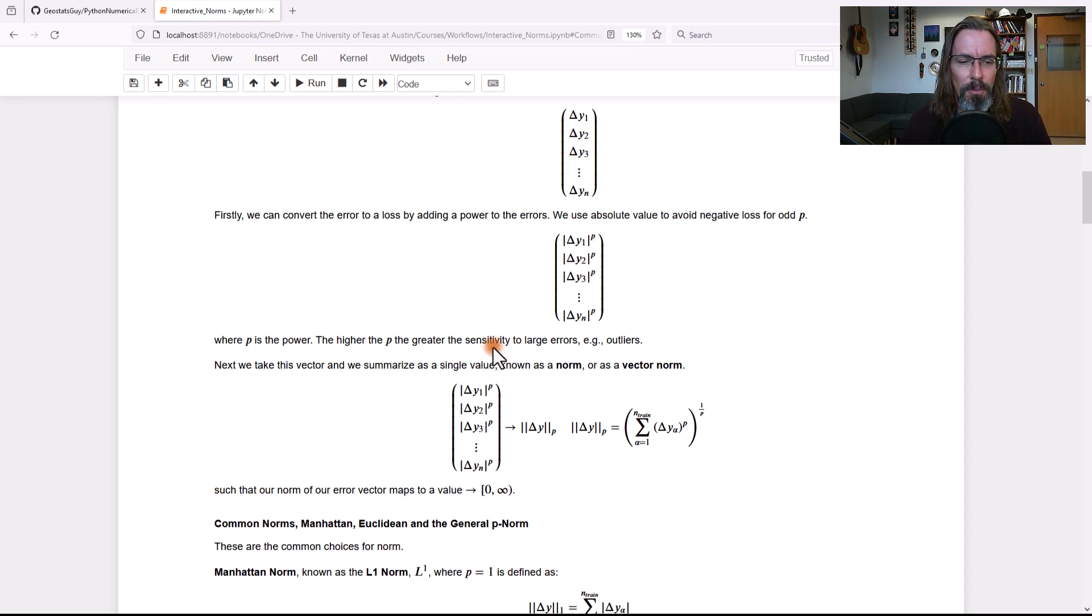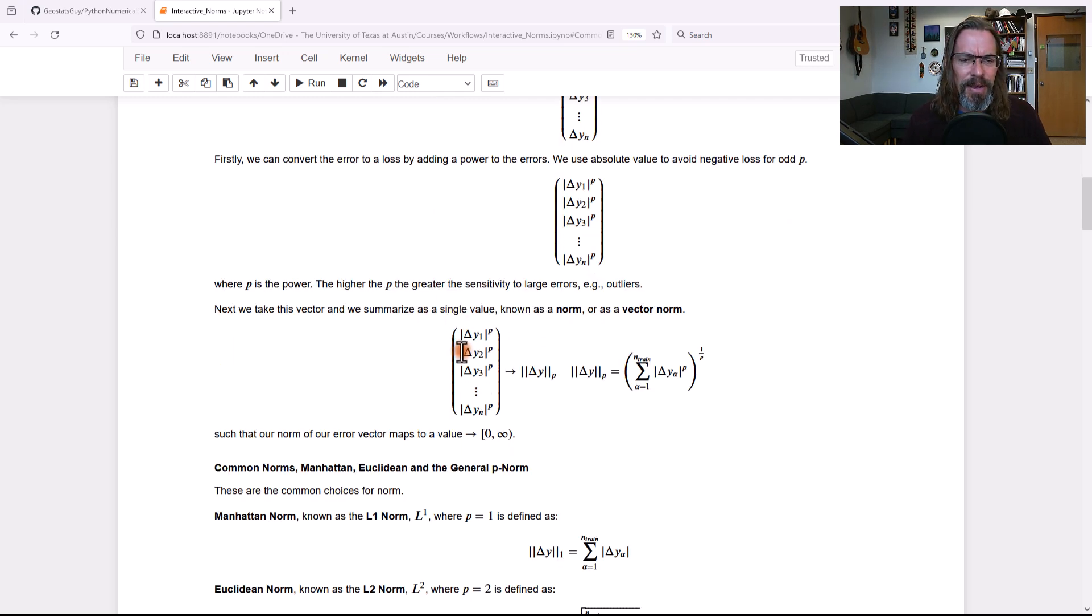Okay, so that changes sensitivity of the model to extremes or outliers. Next, we have to take this vector of all of those losses over the training data and we convert them to a norm, also known as a vector norm. We need that one single value so that we can perform optimization and minimize that. The general p norm representation is the p norm is equal to the sum of all of those components, absolute values raised to the p power. And then we'll raise that to the reciprocal of the p power.